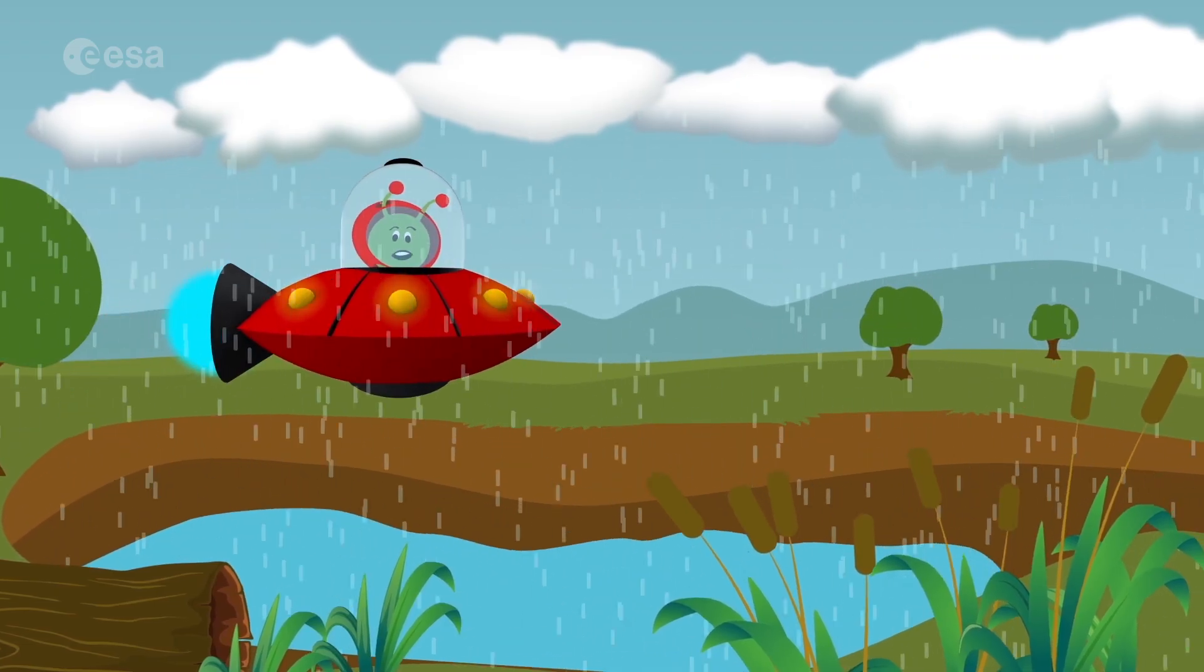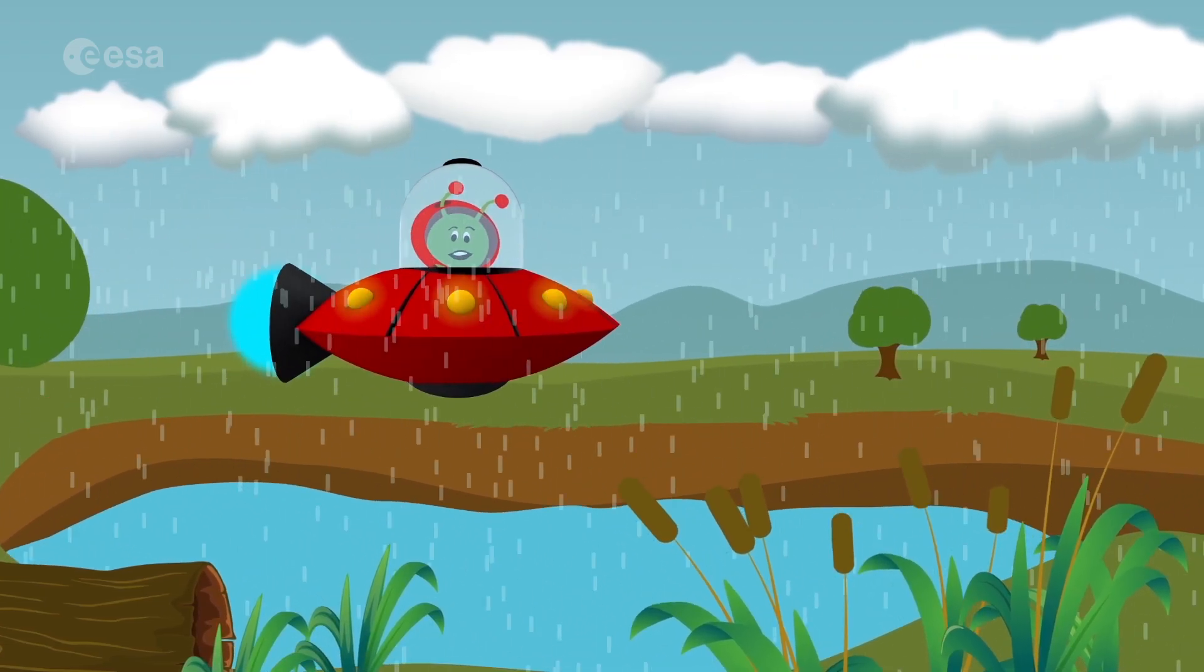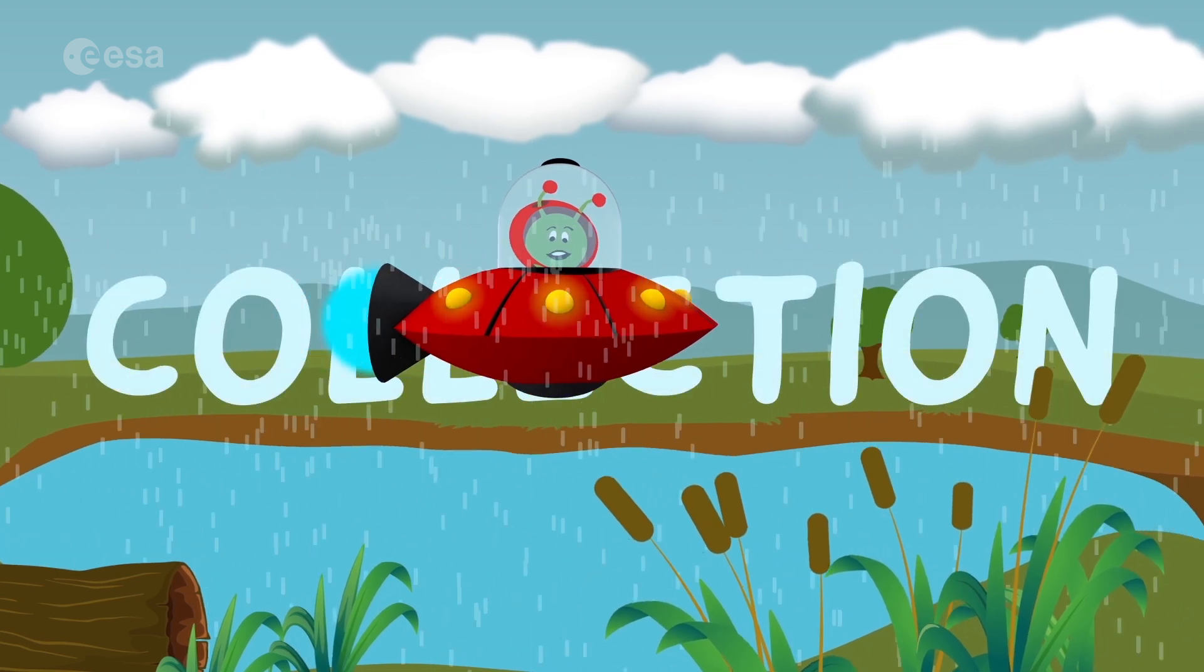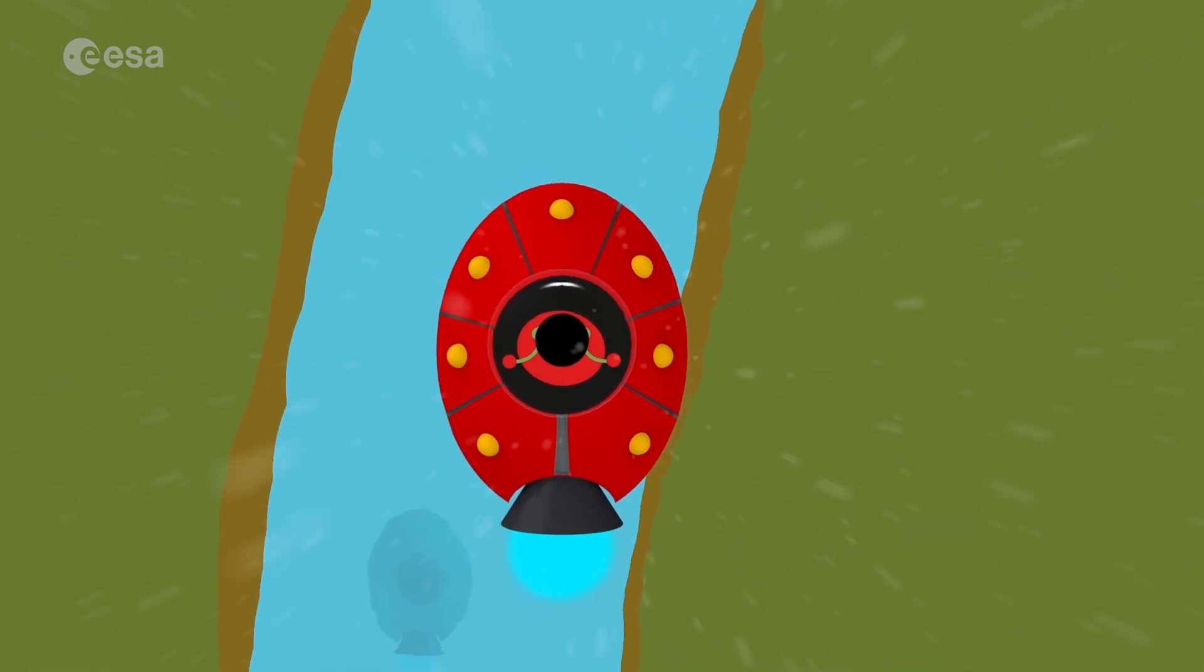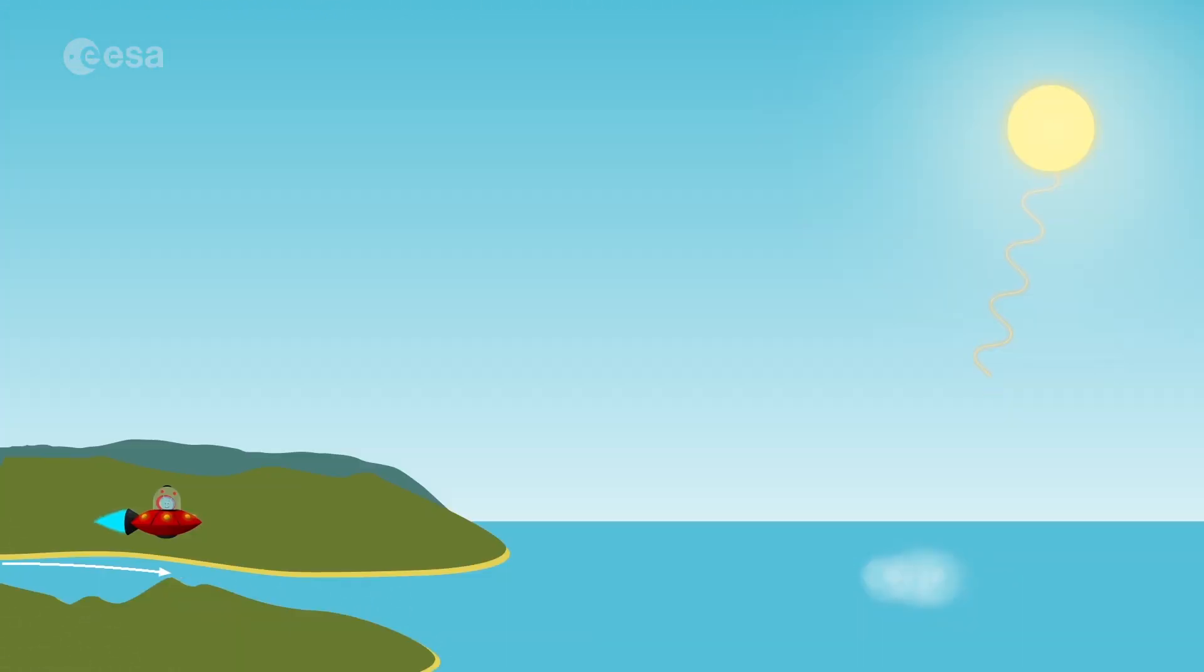All the water that falls back to Earth will be collected in different ways. This is called collection. Water that falls into the oceans, lakes and rivers will evaporate again and begin a new cycle.